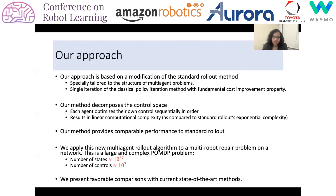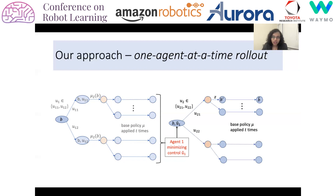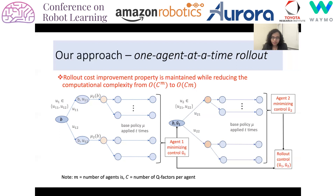Now I'm going to talk about our approach in a little more detail. We call our method the one-agent-at-a-time rollout. Starting from a belief state, the first agent tries to optimize over its own control assuming the second agent is going to perform according to the base policy. Once it achieves its minimizing control, this information is passed onto the second agent and the second agent performs the optimization over its own control. Once both agents decide on their control choices, the joint control is applied on the belief state. By doing this we can achieve linear computational complexity in terms of number of agents.